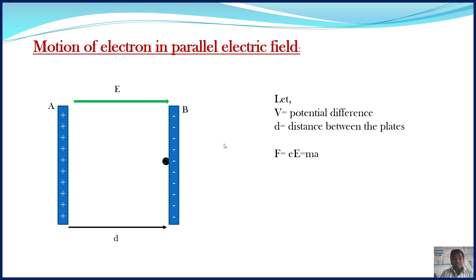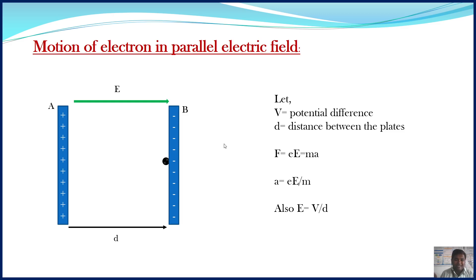By using Newton's second law, we can write force as mass into acceleration, that is M times A. We can calculate the acceleration as A equals eE divided by M. But we know that the electric field E equals potential difference V divided by distance d. So putting the value of E in the above equation, this becomes A equals eV upon Md. Here, capital V is used for potential difference.